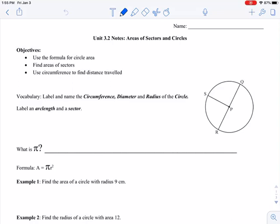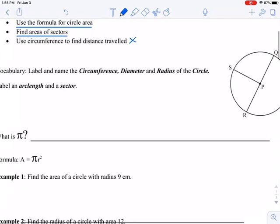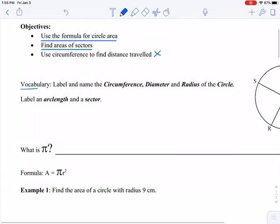This section of notes covers areas of sectors and circles. Today we are going to use the formula for circle area and we're going to use that formula to find areas of sectors. This third objective we covered last time, using circumference to find the distance traveled.